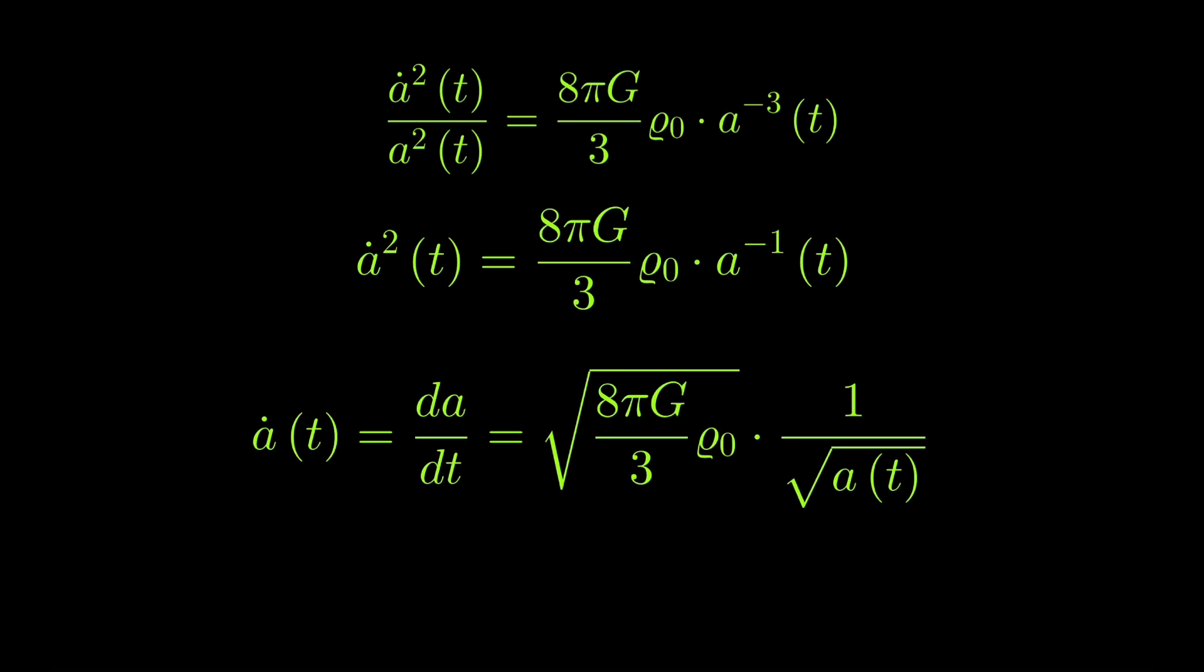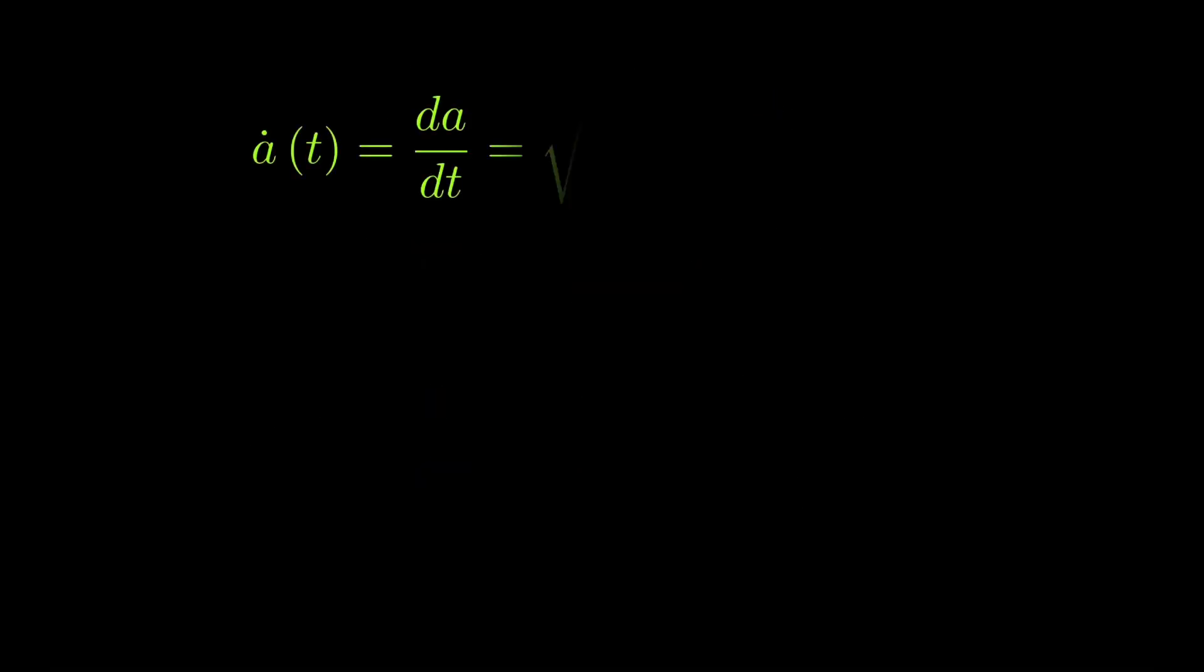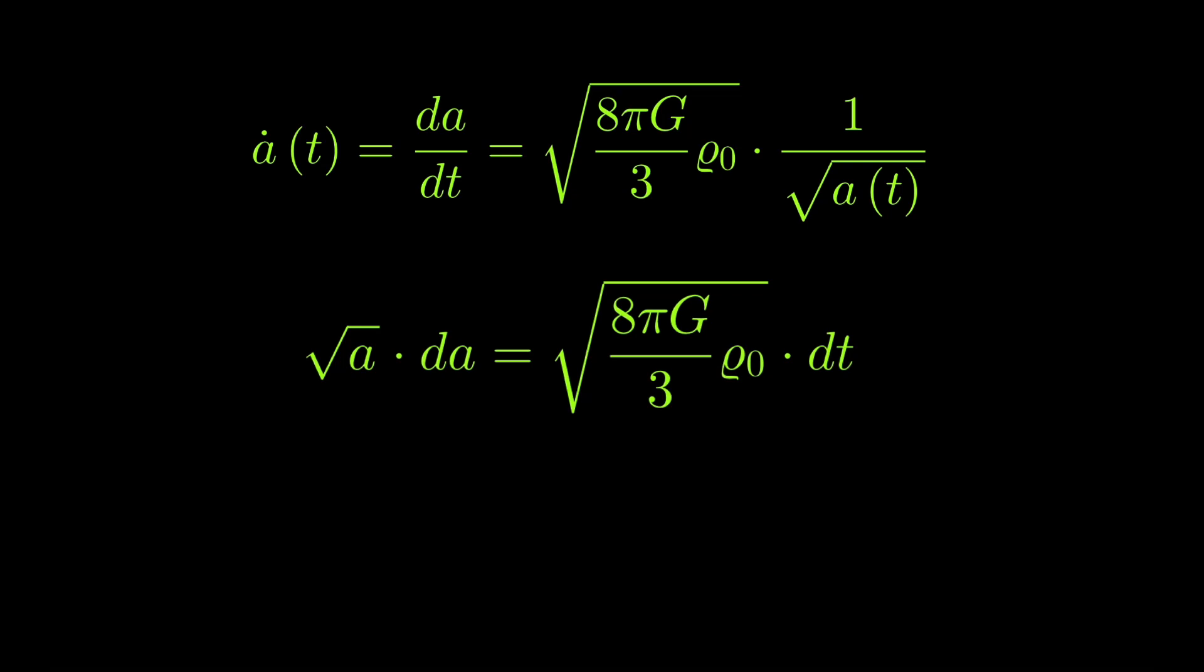Since we wrote a dot as da over dt, we have a differential equation which we can solve via separation of variables. And this is what we're gonna do now. We just put the square root of a to the side of the da and the dt to the side of the constant square root term, the square root of 8πG over 3 times ρ₀ times dt. So, we have square root of a times da is equal to the square root of 8πG over 3 times ρ₀ times dt.